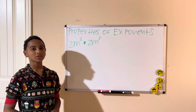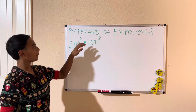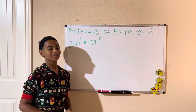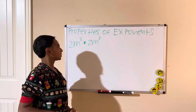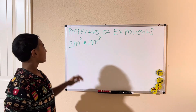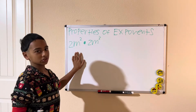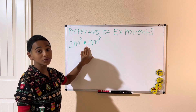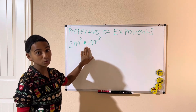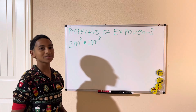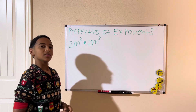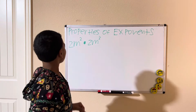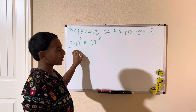Welcome back to my channel. Today we're doing properties of exponents. The first thing we're going to do is simplify this expression: we have 2m squared times 2m cubed.